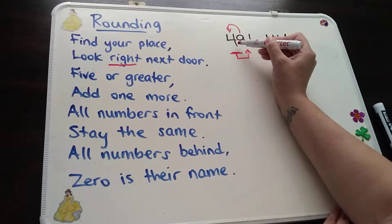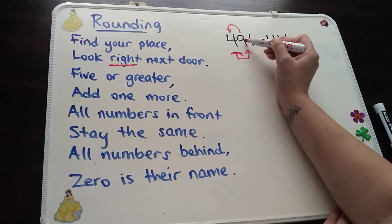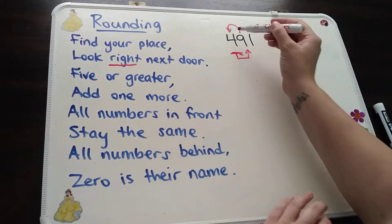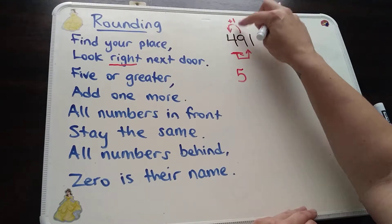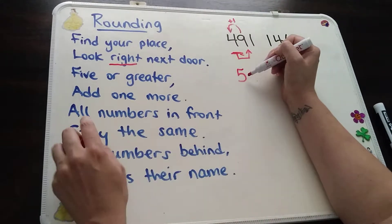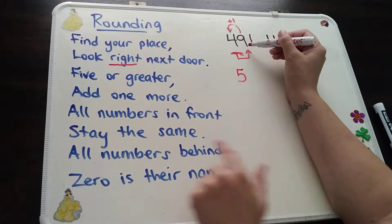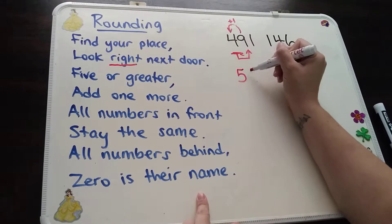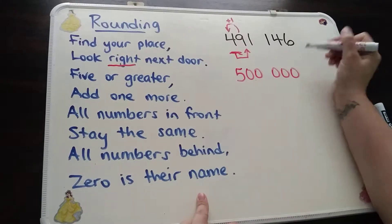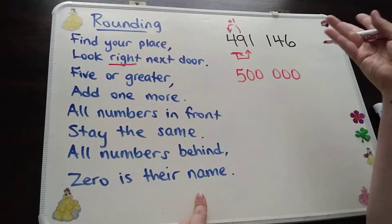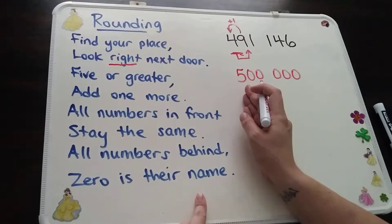Coming back to the poem: find my place, look right next door, five or greater — yes — I add one more. So here's my new number. The four changes to a five, that's where I add one more. All numbers in front stay the same — well, there were no numbers in front, so I don't have anything to do there. And all numbers behind, zero is their name, so every single number that comes afterwards turns into zero. So 491,146 is actually closest to 500,000 when rounding to the nearest 100,000.